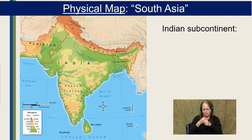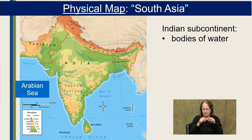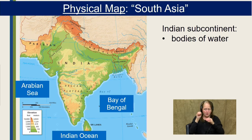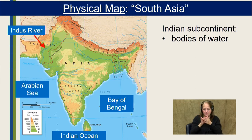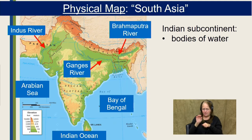Let's take a look at the physical map of South Asia. The Indian subcontinent is dominated by a couple of physical features. To the west we have the Arabian Sea, which borders the Indian Peninsula on the west. To the east we have the Bay of Bengal, and to the south, the Indian Ocean. Rivers are very important: the Indus River starts in the Himalaya Mountains and empties into the Arabian Sea; the Ganges River also starts in the Himalayas and empties into the Bay of Bengal; and the Brahmaputra River starts in the Himalayas and empties into the Bay of Bengal in the area of Bangladesh.